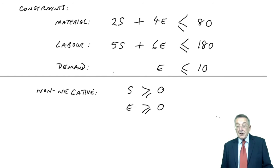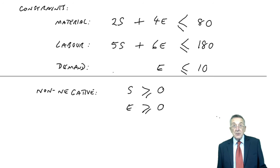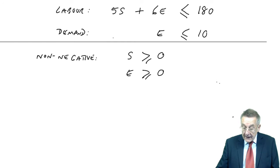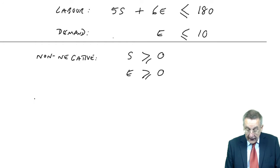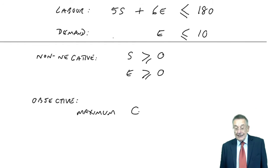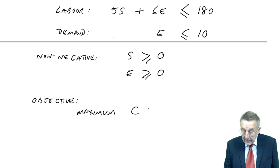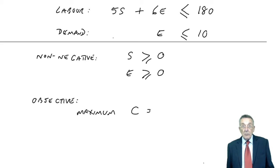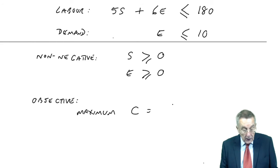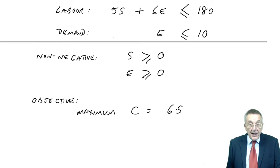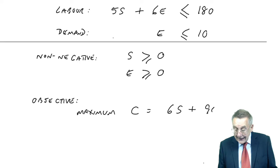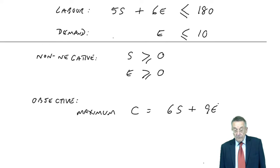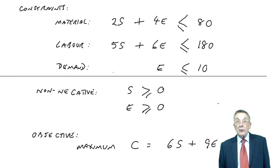So, there are constraints. Whatever answer we end up with, E and S must satisfy all of those equations. But, finally, for setting up the problem. Our objective is to maximise the contribution, which I defined as C. And, let's write an equation there for C. Because, surely, however many we end up producing, whatever the answer turns out to be for S and for E, each standard makes 6 dollars, so, in total, 6S from standard chairs. Each executive makes 9 dollars, so, in total, 9E for executive.